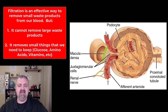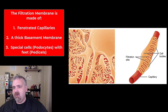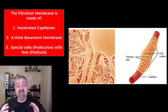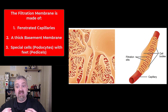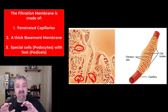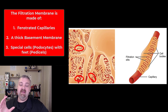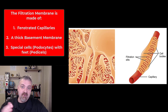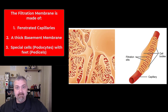These special cells are called podocytes. What creates the filtration membrane is: number one, fenestrated capillaries — capillaries with windows or larger openings. Surrounding these is a thicker than usual basement membrane. The key cells are the podocytes, which have foot-like extensions called pedicles — finger-like projections surrounding the capillaries. So the fenestrated capillary, the thick basement membrane, and the slits created by the pedicles together form the filtration membrane. If you're small enough to pass through it, you'll make it into the filtrate.